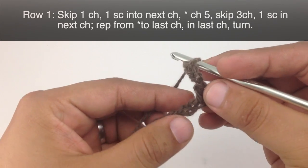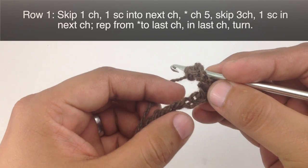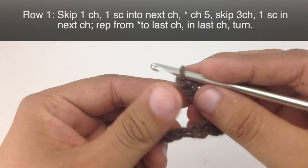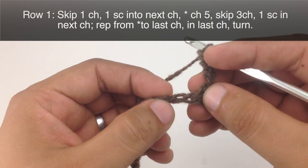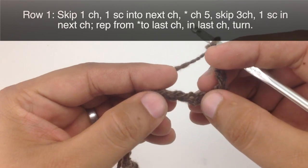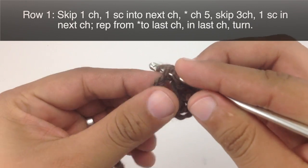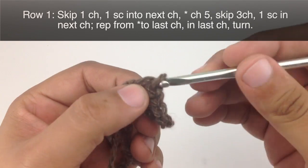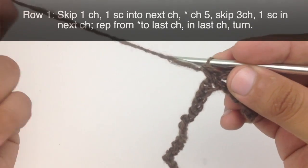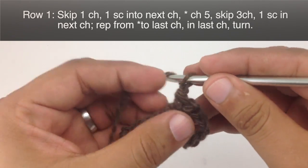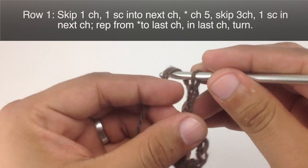Then we are going to skip the next 3 stitches (1, 2, 3), and then we will do a single crochet into the 4th stitch (1, 2, 3, here we go, 4). And we are going to repeat this sequence all the way across to the end of the row. Then we will turn our work.